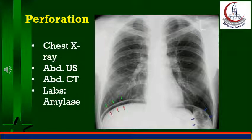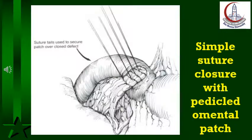Abdominal ultrasonography can detect pneumoperitoneum sometimes earlier than plain X-rays and will also demonstrate intraperitoneal fluid collection. IV fluids, analgesics, PPI, and antibiotics are started, and the patient is prepared for exploration within two to four hours. During that time, the patient is investigated for comorbidities and any imbalance is optimized, as well as correction of fluid and electrolyte imbalances.